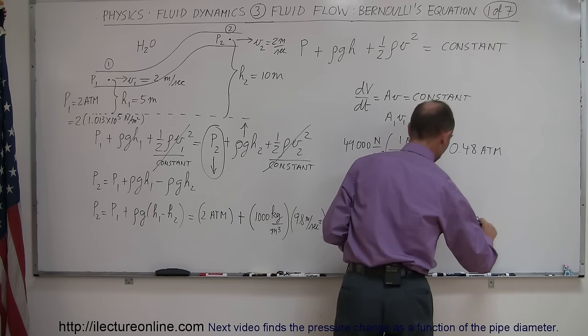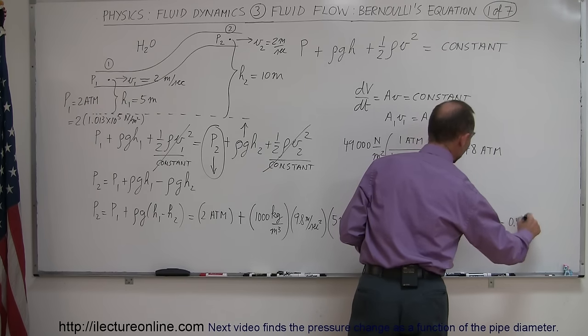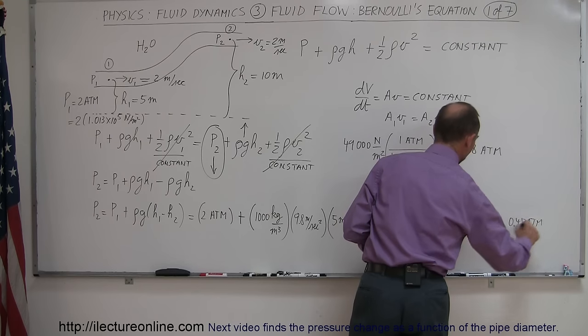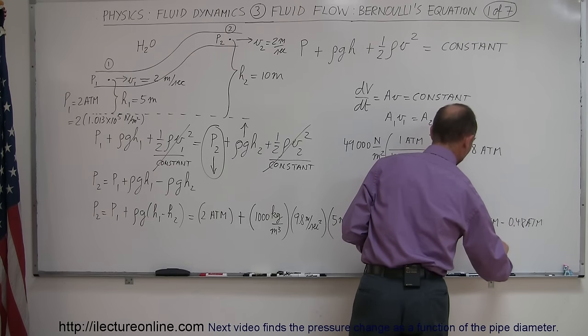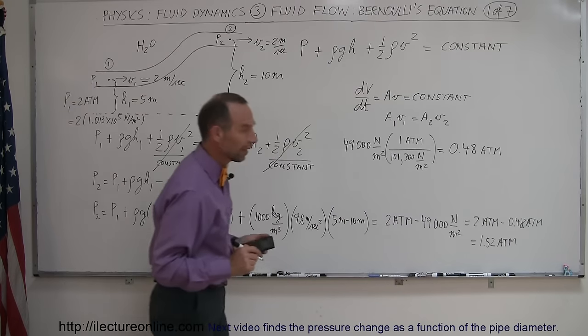All right, so this can then be written as 2 atmospheres minus 0.48 atmospheres. So we can say this is equal to 1.52 atmospheres. There we go.